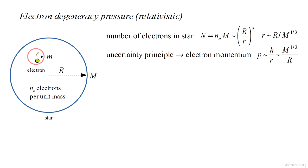Now we look at a relativistic analysis. The steps are the same until we get to the electron kinetic energy. The relativistic expression for kinetic energy is square root of p squared plus m squared minus m. For small p this agrees with the classical expression, but for very large p, which corresponds to very small star radius, it behaves like p and not like p squared.